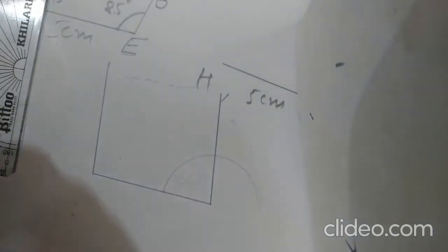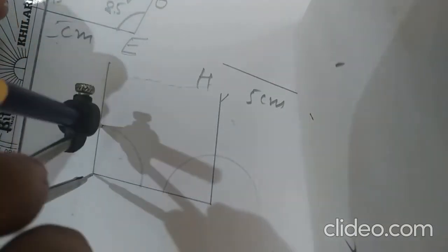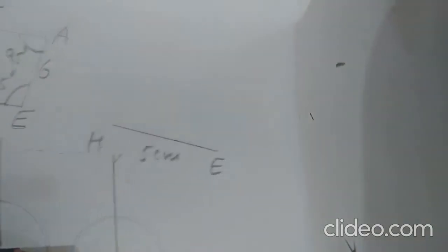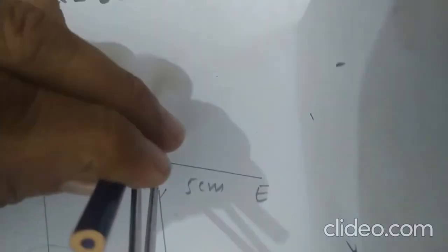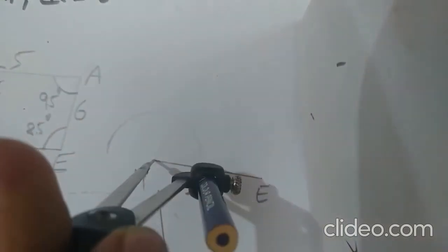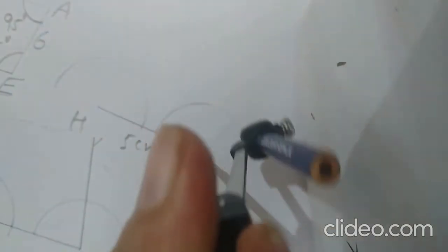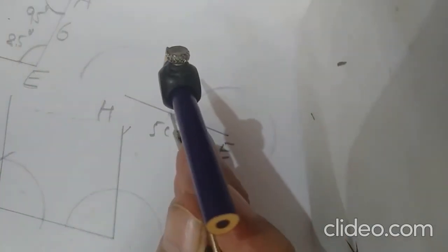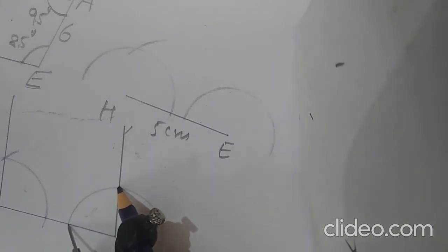Take two semicircles — one at H and one at E. This is a rough one; now we transfer the angles to the fair copy using the same arcs, like a copy-paste. Note these two arcs — mark the same arcs on the fair copy. This is 95°, so mark 95° there. This is 85° — measure this 85° and mark it here.